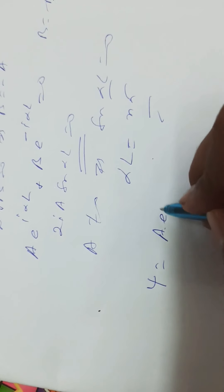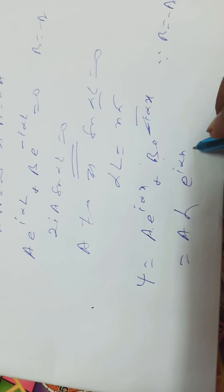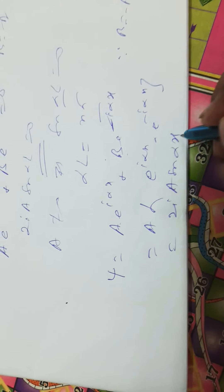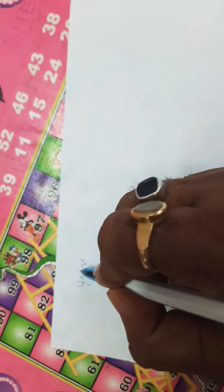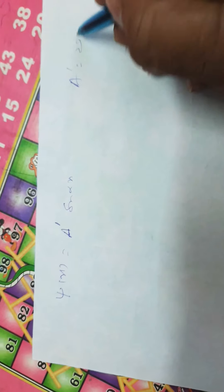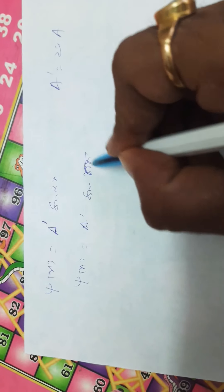So αl equal to nπ is the quantization condition, where n is an integer. Substituting B equal to minus A back into the wave function, ψ equals A·e^(iαx) minus A·e^(−iαx), which simplifies to 2iA·sin(αx). Writing A' equal to 2iA, the wave function becomes ψ(x) equal to A'·sin(nπx/l).